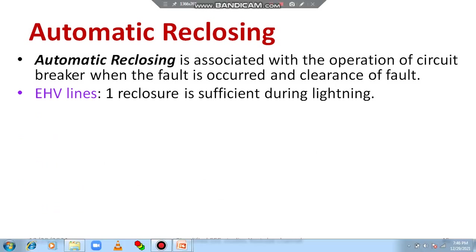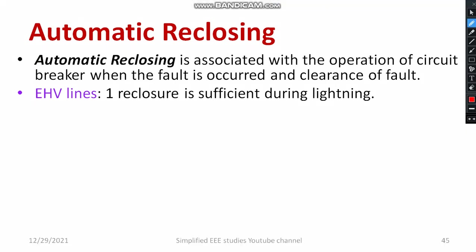Let us consider an extra high voltage line. When we talk about extra high voltage lines, one re-closure is more than enough during lightning. During lightning, the high voltage is going to strike over the particular line and there may be a fault. To overcome that fault, one opening and one closure is more than sufficient for an extra high voltage line.